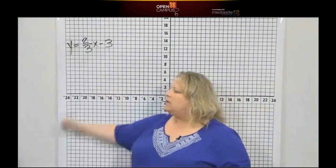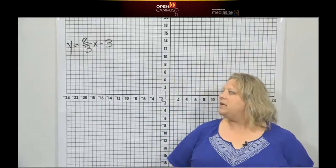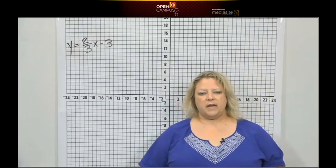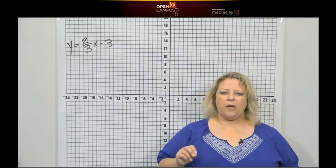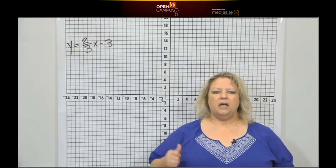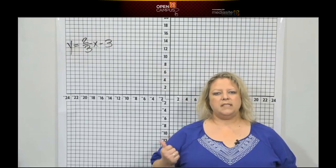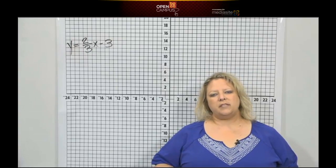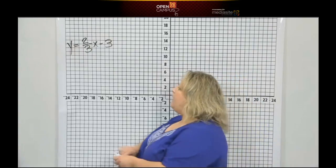Here's the last equation in our slope-intercept form. It's y equals two-thirds x minus three. And again, all I want to do first is identify what is the slope, what is m, what is the y-intercept, what is b. So let's do that.